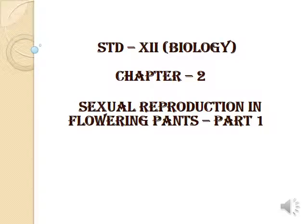In this chapter, we will see sexual reproduction in flowering plants. All flowering plants show sexual reproduction. The scientist Camerarius in the year 1694 first described sexual reproduction in plants.